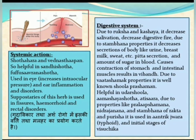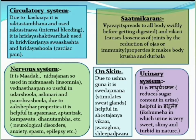On the circulatory system, two effects are seen: raktastambhana and hridaya shakti vardhak. It is used in rakta strava and hridaya vikar, jvara, shvashakasat, and hridaya shula. The cause of Vyavayi and Vikasi properties is that it spreads instantly throughout the entire body without being digested. Vikasi causes looseness of joints by reducing ojas (immunity), making the body krisha and durbala. On the nervous system, it is a madaka and nidrajanan, so it treats insomnia. Due to its akshepahara properties, it is used in apasmara, aptantraka, kampavata, and other neurological disorders including spasm and epilepsy.